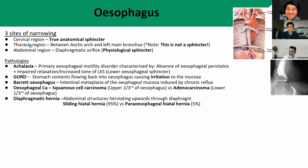Esophageal cancer typically presents first with progressive dysphagia — solids first, then liquids — and finally weight loss. Esophageal cancer has an aggressive course due to the lack of serosa in the esophageal wall, allowing for rapid extension. There are two types: squamous cell carcinoma, which mainly affects the upper two-thirds of the esophagus — main risk factors being smoking and alcohol — versus adenocarcinoma, which affects the lower one-third of the esophagus, with main causes being obesity and chronic gastroesophageal reflux as well as Barrett's esophagus.